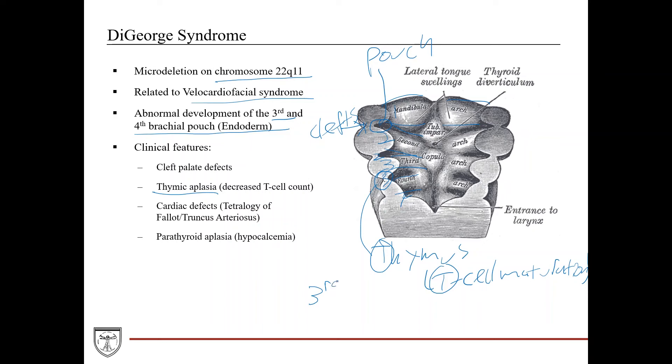Now the third and the fourth pouches are both responsible for development of all of the parathyroid glands. And there's typically four of them on the posterior aspect of the thyroid gland. And these obviously produce parathyroid hormone, which is involved in calcium homeostasis. So if you don't have these, you're going to have parathyroid aplasia, no parathyroid hormone. You're going to have hypocalcemia. Now abnormal development of the third and fourth pouches is going to affect the first and second pouches, which is where you can get these cleft palate defects as well.